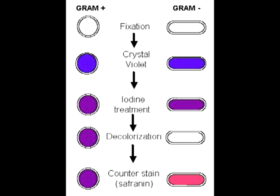They are then treated with iodine, and remember that the iodine binds with the crystal violet and makes a slightly larger molecule that is purplish in color. And again, the gram-positive and gram-negative bacteria are the same color at this stage.